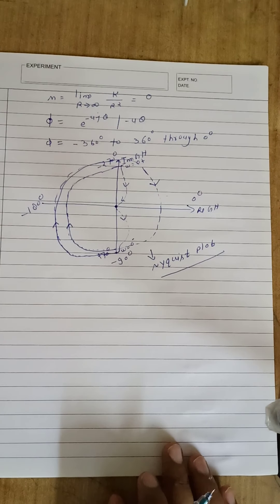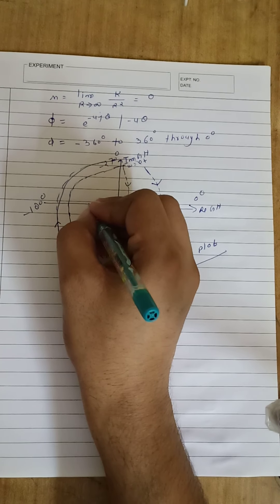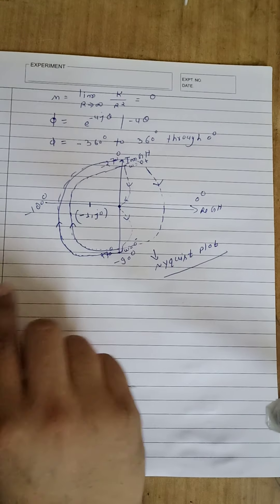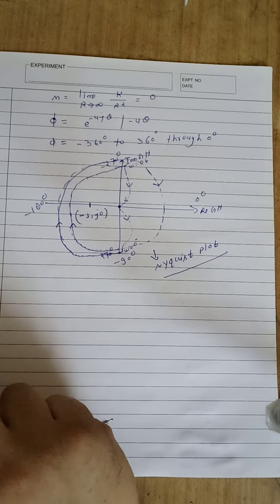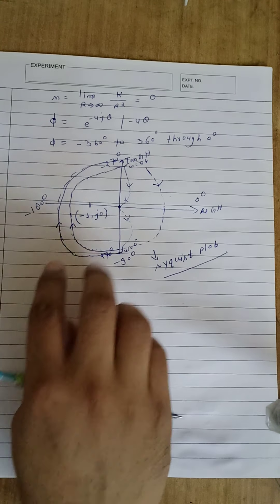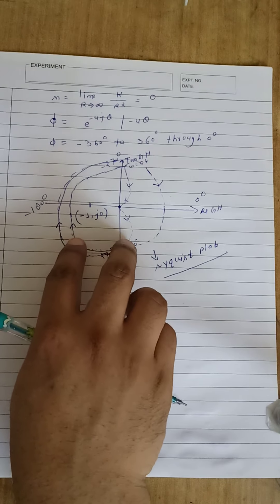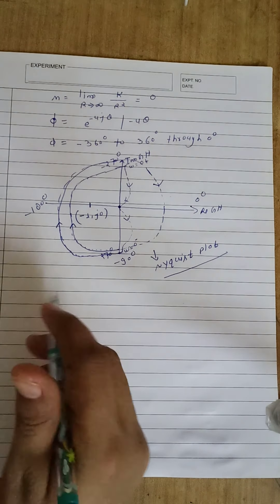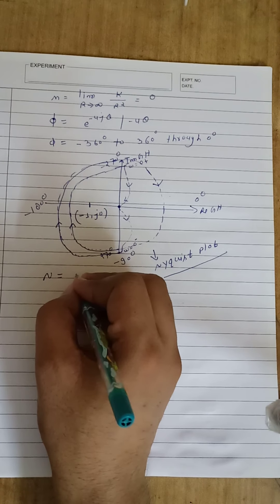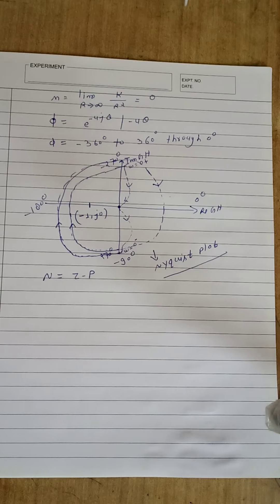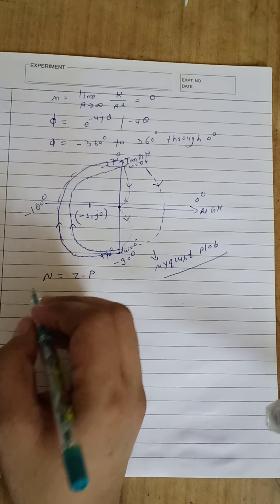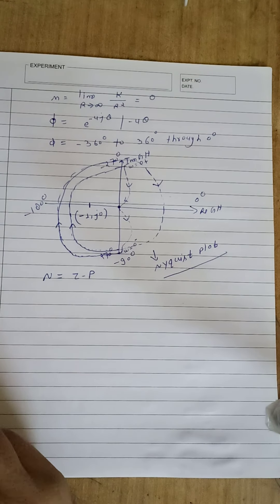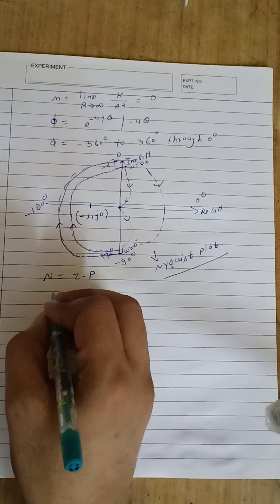To determine stability according to Nyquist stability criteria, we will first locate the critical point minus 1 comma j0. Obviously, for section C4 we have infinite radius, so the point minus 1 comma j0 will lie inside the inner circle as well as the outer circle. According to Nyquist stability criteria, we have the formula N equal to Z minus P. Here the Nyquist plot encircles the critical point by two times in the clockwise direction, so we have N equal to 2.